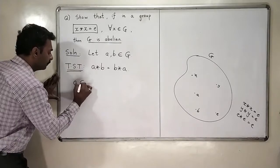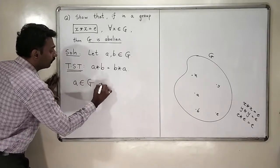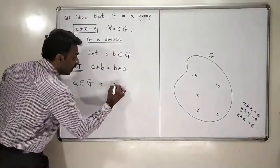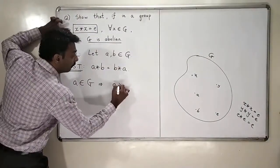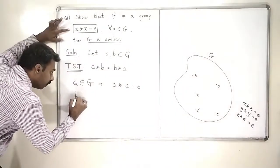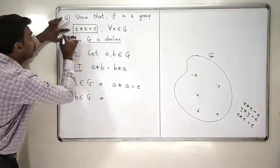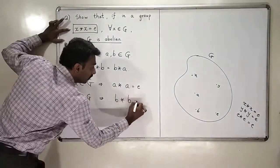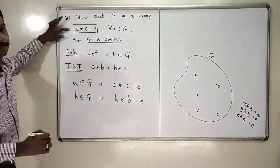So a belongs to G. Therefore, what will happen? By this particular property what will happen? a star a will be equal to identity. Similarly, b also belongs to G. Therefore, by the same property that my group has, b star b will also be equal to identity.